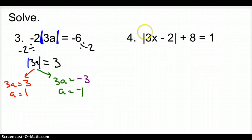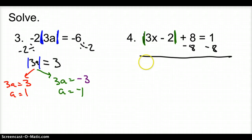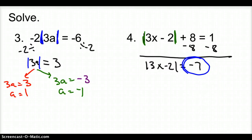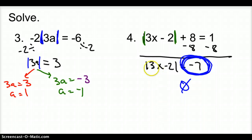Let's look at number 4. We want to get the absolute value bars all by themselves. We subtract 8, and we are left with the absolute value of 3x minus 2 equals negative 7. Now, we have an absolute value equaling a negative number. When an absolute value equals a negative number, it is no solution — because an absolute value cannot be negative. It measures distance. What's inside the bars cannot equal a negative number.